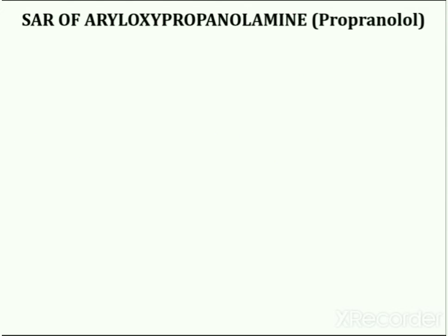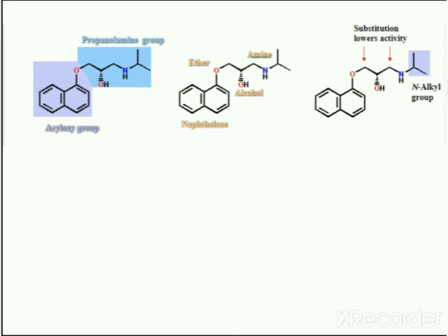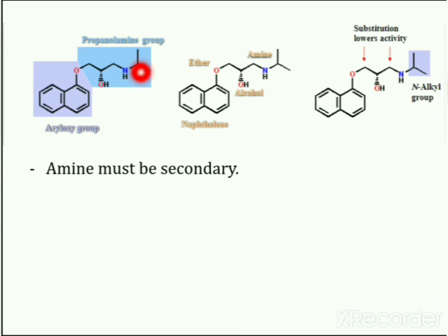Next is the Structure Activity Relationship of propranolol. Propranolol is an aryloxypropanolamine because it contains an aryloxy group and a propanolamine group. If we elaborate this structure, it contains a naphthalene ring system, an ether, and an alcohol and amine side chain.